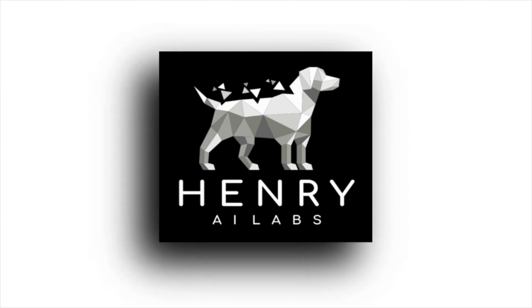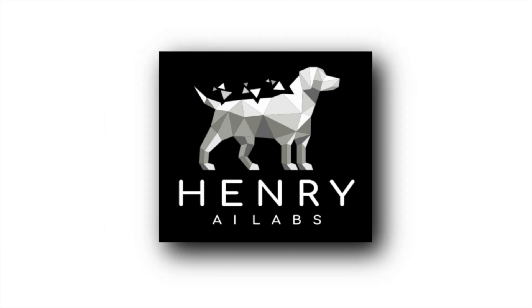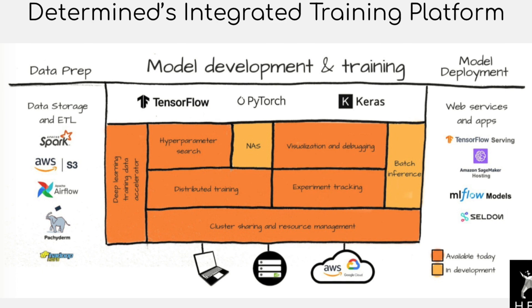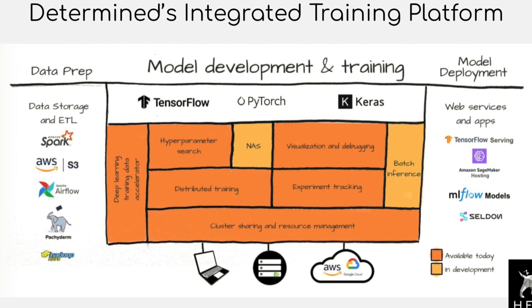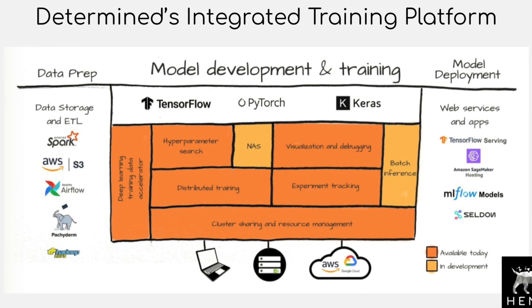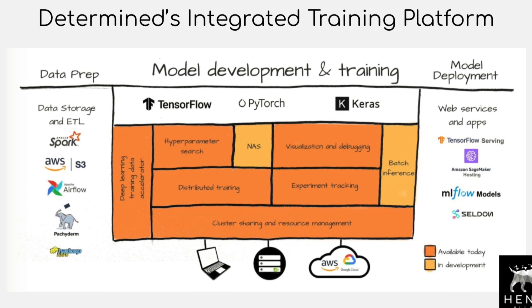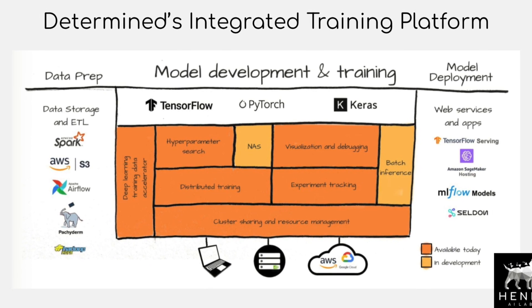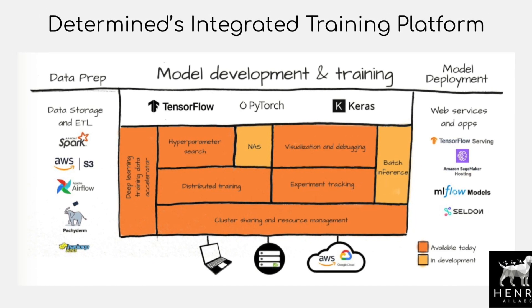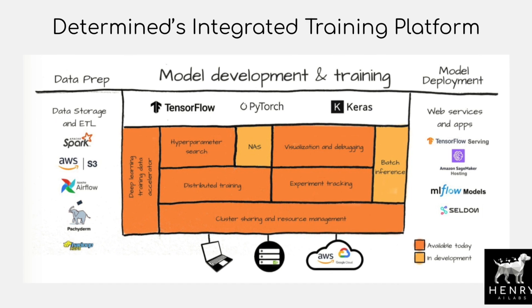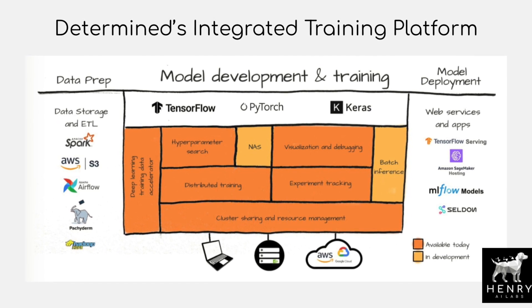Thank you so much for watching Henry AI Labs. On this YouTube channel, we've reviewed several deep learning research papers. So after processing all this, do you have an idea for a new transformer neural network? What about a technique to improve GANs or Q-learning? Maybe you want to try out deep learning with a new dataset.